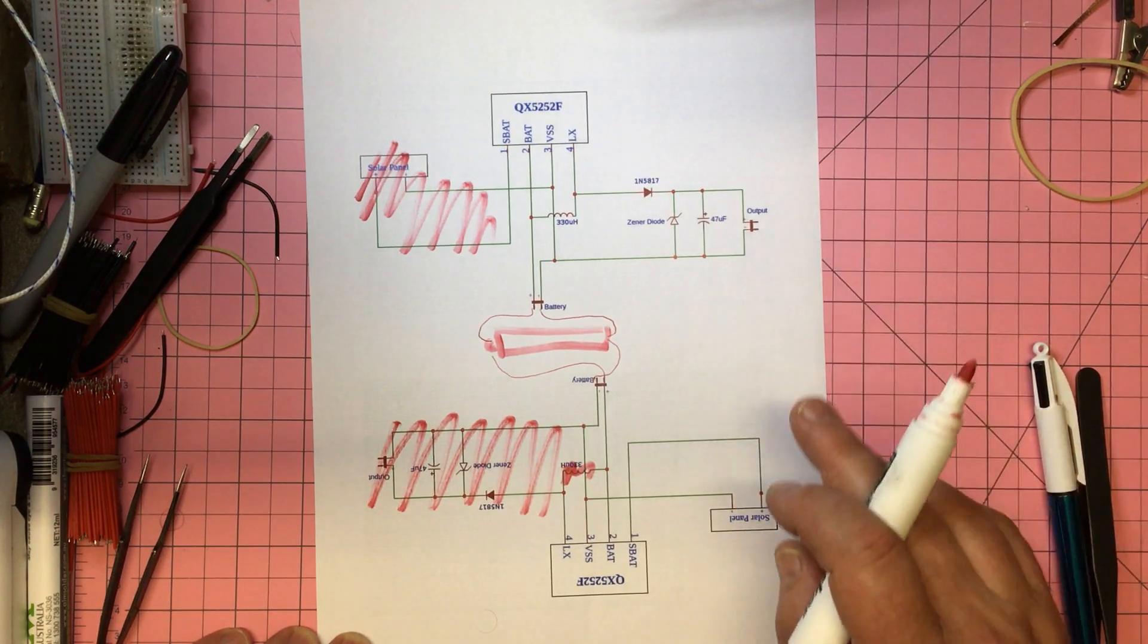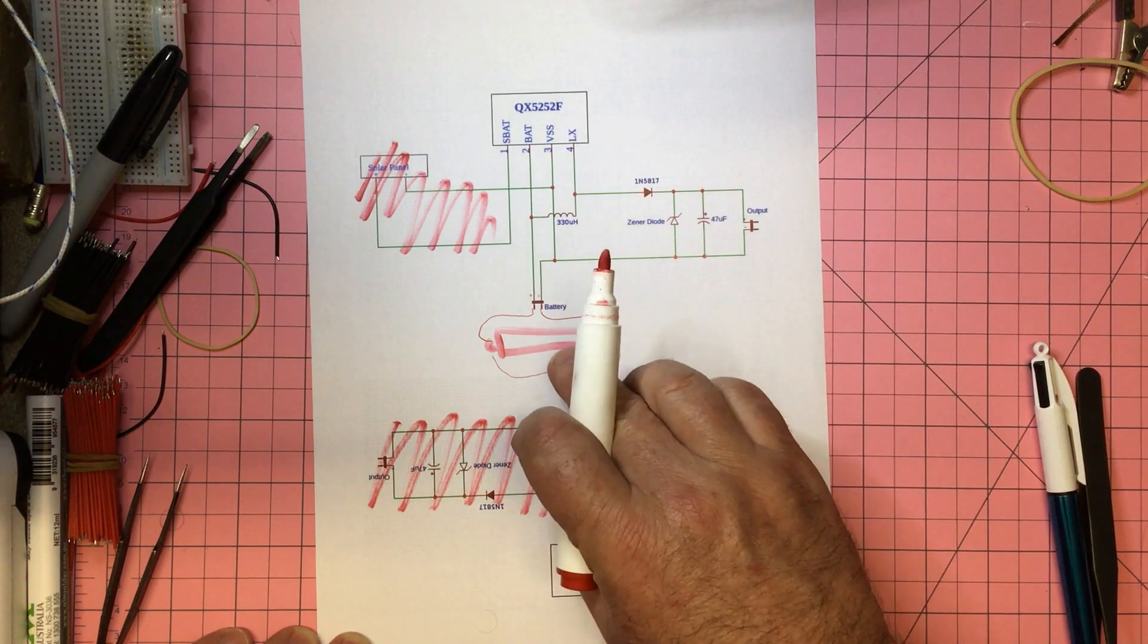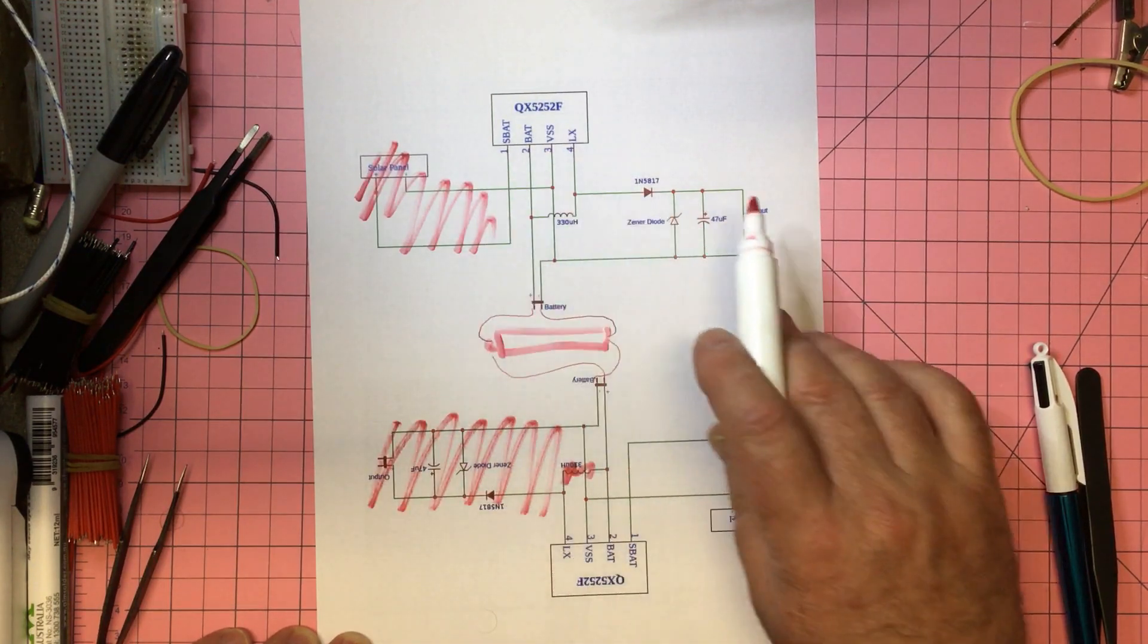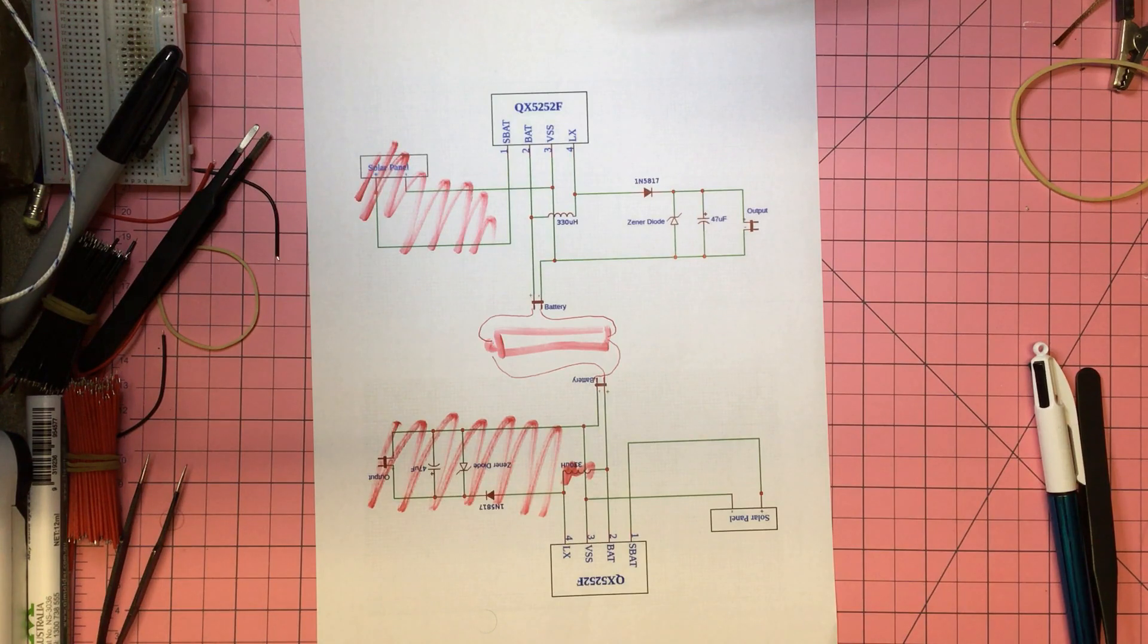Then nighttime, the solar panel is not feeding through, this side of things shuts down, but this one is still open because the solar panel is missing. This one is still open and it will provide. So that was my plan, but I never knew if it would work, so the only way to find that out is to breadboard it up and see what happens.